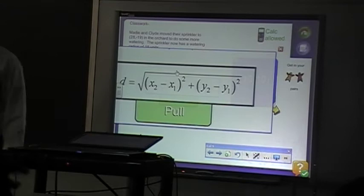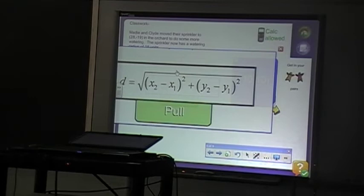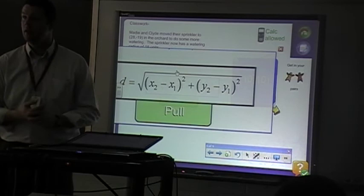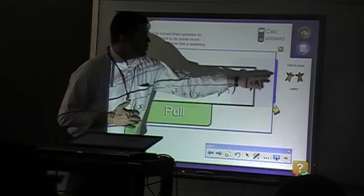D is going to equal the square root of, okay, x2 minus x1, the quantity squared, plus y2 minus y1, the quantity squared, and every distance is going to be what? What do we know it's always going to be? Positive. It's always going to be positive. You can't have a negative distance because it's a square root.